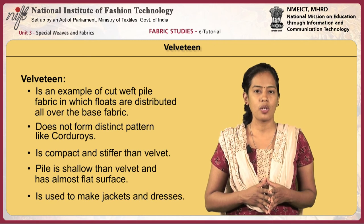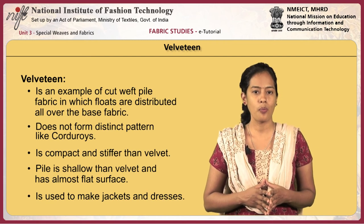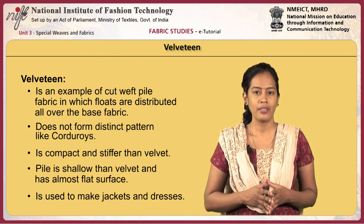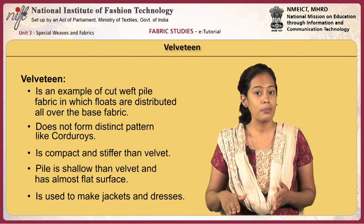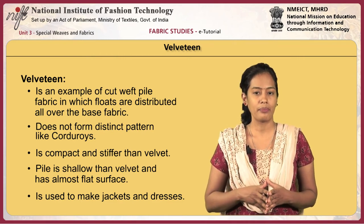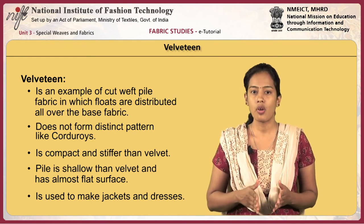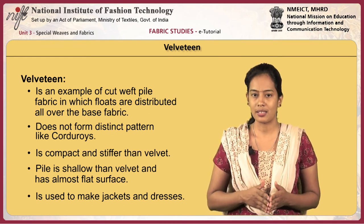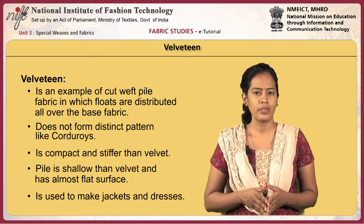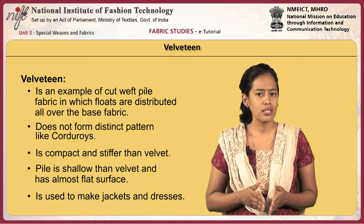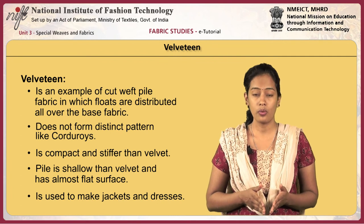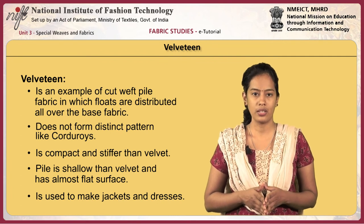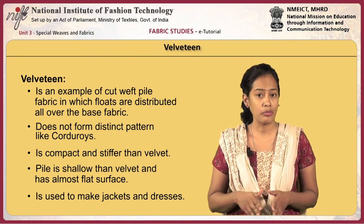Velveteen is an example of cut weft pile fabric in which floats are distributed all over the base fabric. Thus, they do not form a distinct pattern like corduroys. It is compact and stiffer than velvet. The pile is shallower than velvet and almost has a flat surface.